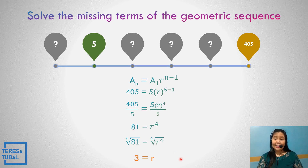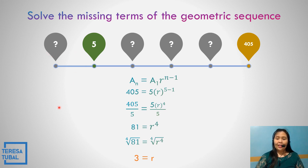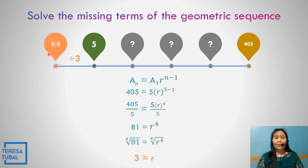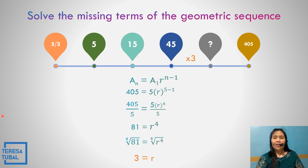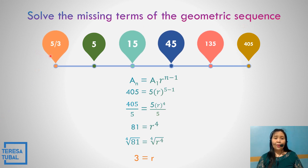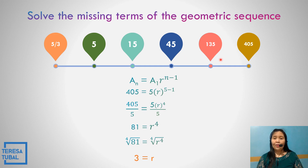So the value of the common ratio r equals positive 3, because 3 times 3 is 9, 9 times 3 is 27, and 27 times 3 is 81. So going to the left, 5 divided by 3 gives 5 over 3. Going to the right: 5 over 3 times 3 is 5, 5 times 3 is 15, 15 times 3 is 45, and 45 times 3 is 135. So the missing terms of this geometric sequence are 5 over 3, 15, 45, and 135.